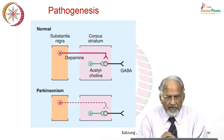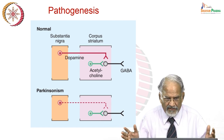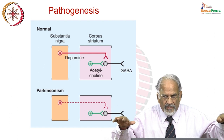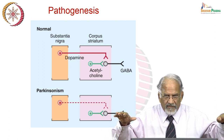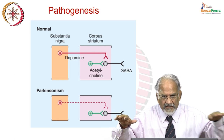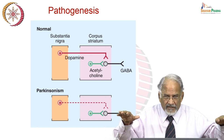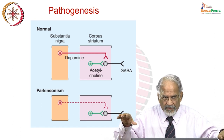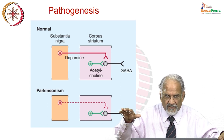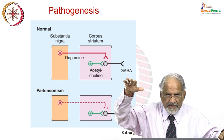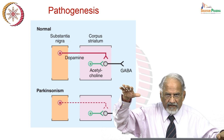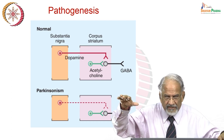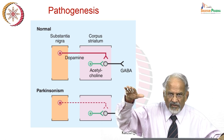Looking at the broad pathophysiology: there is a dopaminergic neuron which has an inhibitory influence on the cholinergic neuron. When there is Parkinsonism, the dopaminergic neuron decreases, and therefore the inhibitory influence on the cholinergic system decreases and cholinergic transmission increases. What you finally see is a dopaminergic-cholinergic imbalance — dopaminergic transmission decreases and there is a relative increase in cholinergic transmission.